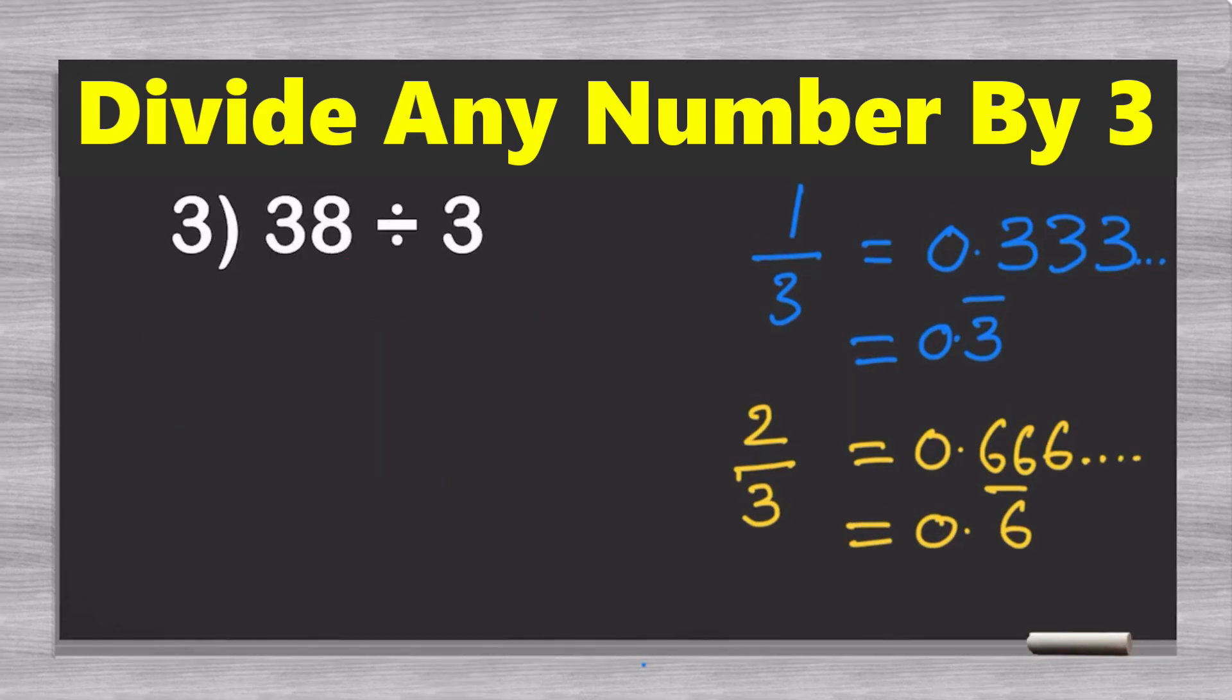So, now we are on our third and final example. 38 divided by 3. And again, the first thing that we have to do here is find the closest multiple of 3 without going over 38. And in that case, the answer is 36, which is 3 times 12. And then, we can finish it off by repurposing 38 as just 36 plus 2 over 3. And now, we can divide.